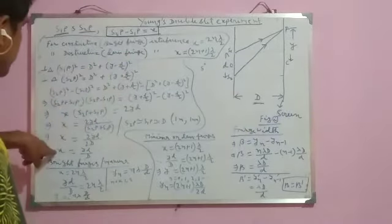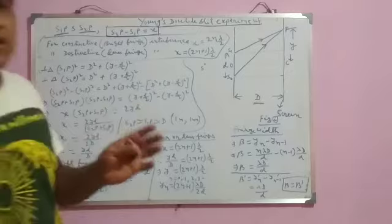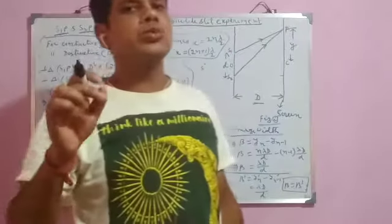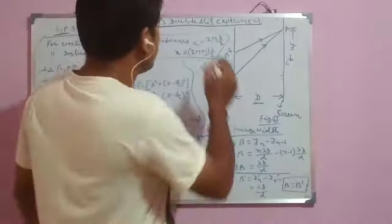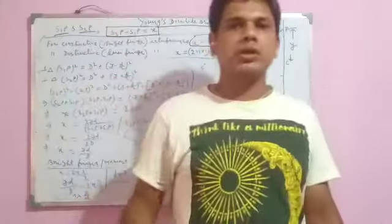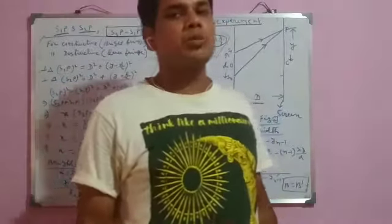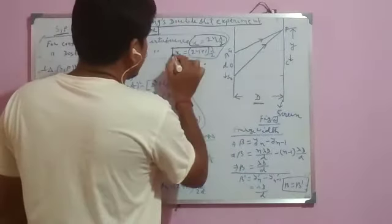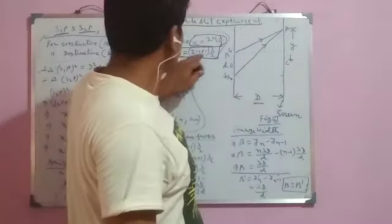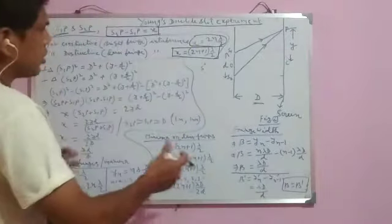Before finding X, we must memorize that for constructive or bright fringes, the path difference X should be an even multiple of λ/2, i.e., X = 2nλ/2 = nλ. For destructive or dark fringes, the path difference should be an odd multiple of λ/2, i.e., X = (2n+1)λ/2, where λ is the wavelength of the monochromatic wave.